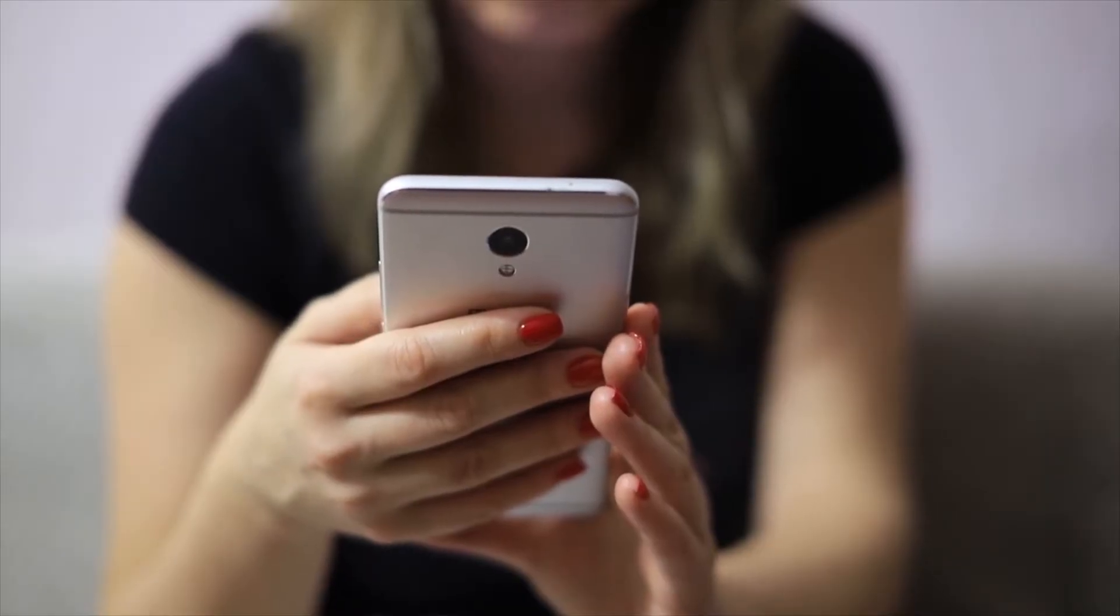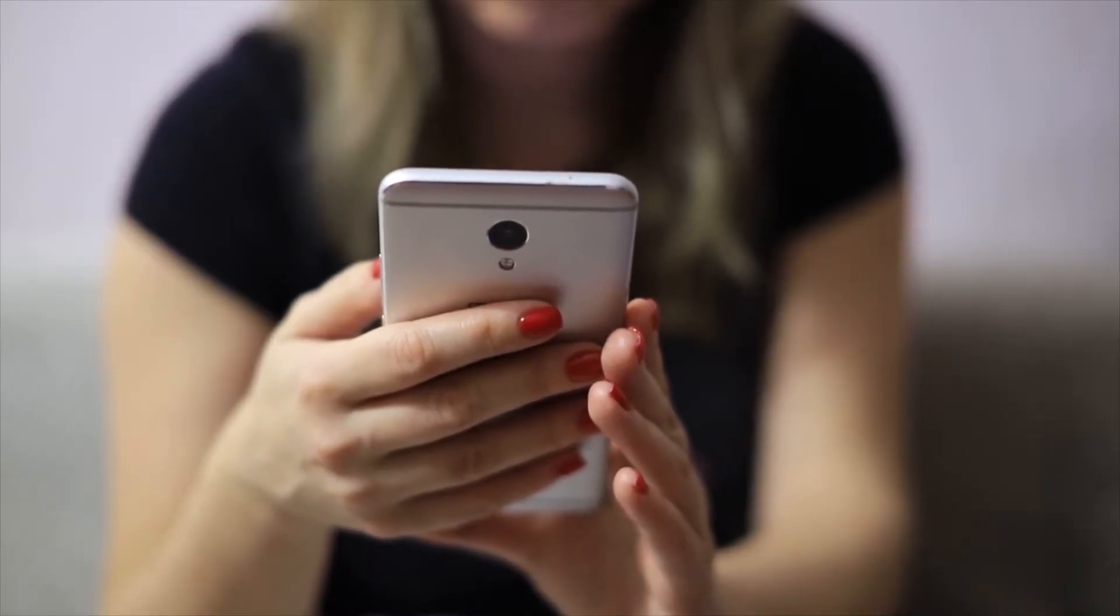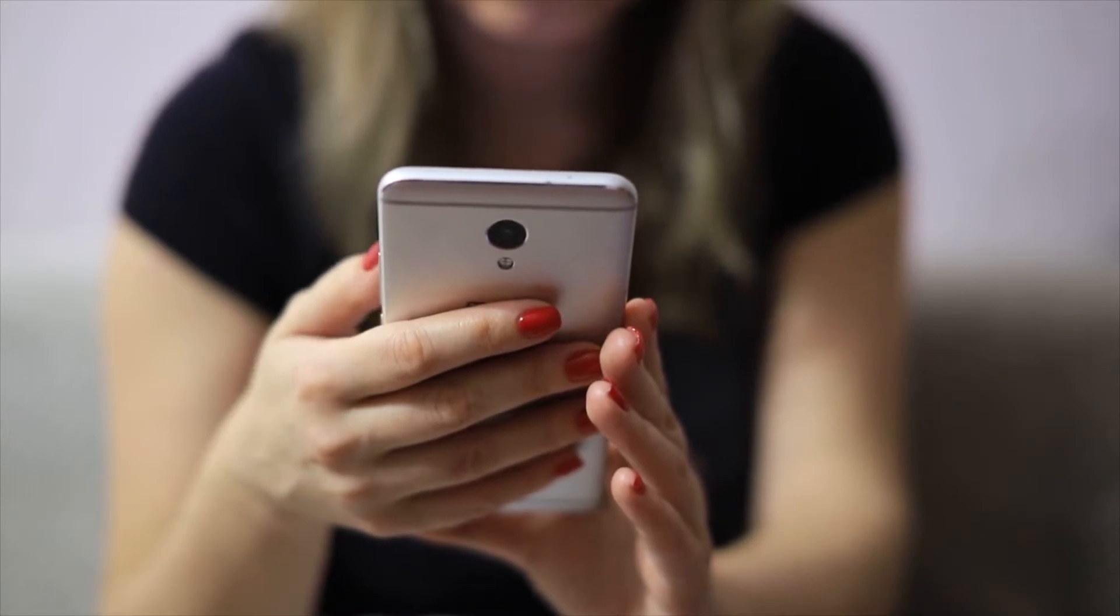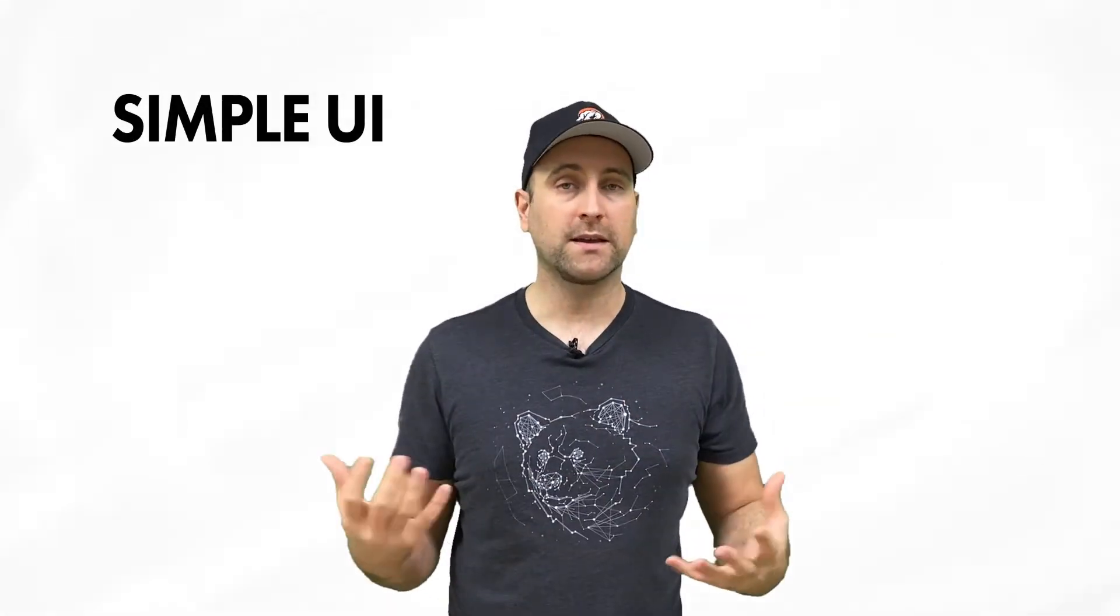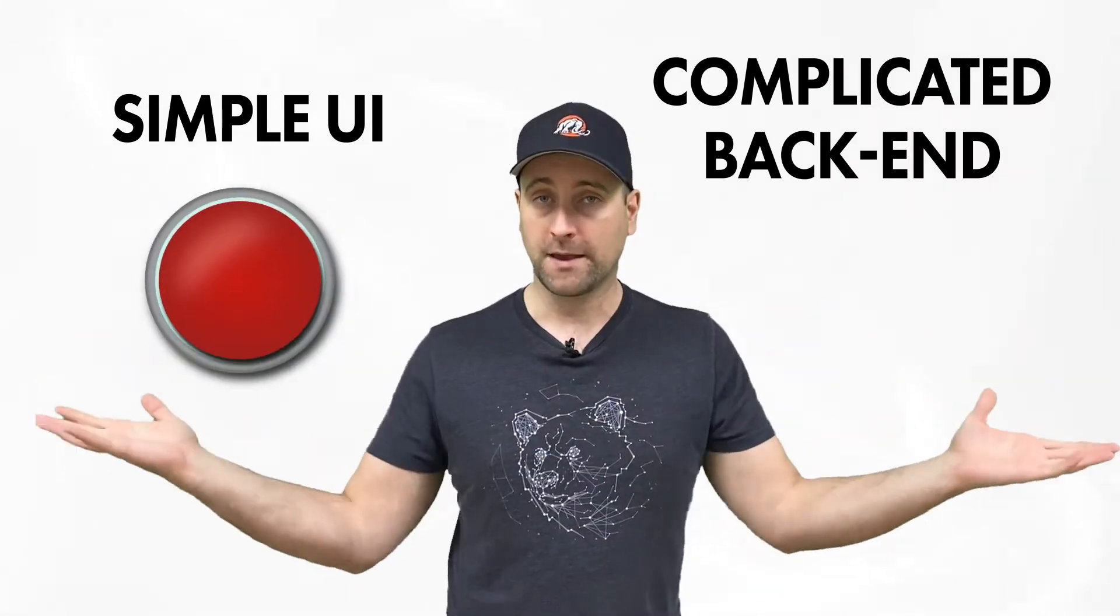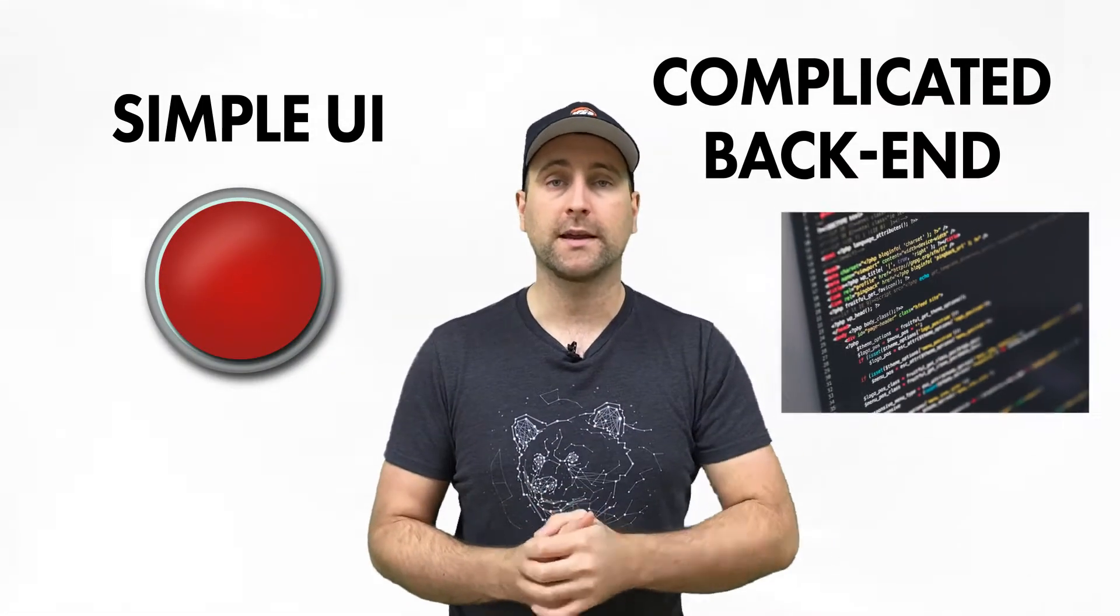So, what that means to a user is that there might be a button to do something and that something just does what it's supposed to do. And this button can be something like getting you from A to B in an autonomous car. Now, of course, the back end of this is going to be fairly complicated. But even though the user interface is simple, the back end might not be as simple. Because obviously, to push a button and make it work, that's actually really complicated.